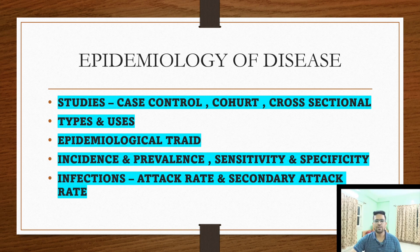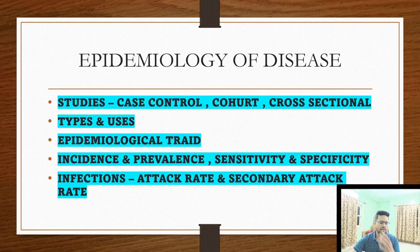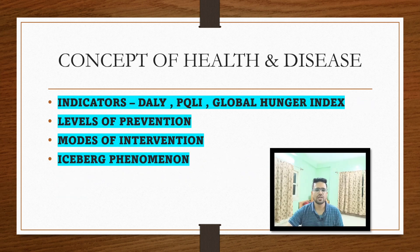Now we'll see what topics chapter-wise you must read. Starting with epidemiology of diseases: read case-control, cohort, and cross-sectional studies; types of epidemiology and their uses; epidemiological triad; incidence and prevalence — how to differentiate and calculate them; sensitivity and specificity — very basic and very important topics UPSC asks again and again; and how to calculate attack rate and secondary attack rate in case of infections.